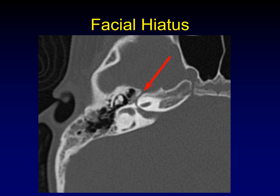This is the facial hiatus. Just to orient you, here is the labyrinthine segment of the facial nerve — you don't want to confuse that with a fracture either. This is the tympanic segment of the facial nerve, and that makes this the geniculate ganglion. Sometimes the geniculate ganglion sits all the way along the anterior aspect of the petrous apex, and sometimes it's a little bit tucked in, and so you need a canal for the greater superficial petrosal nerve to extend from the geniculate ganglion out into the middle cranial fossa. That canal is the facial hiatus — it carries the greater superficial petrosal nerve when such a canal is necessary.